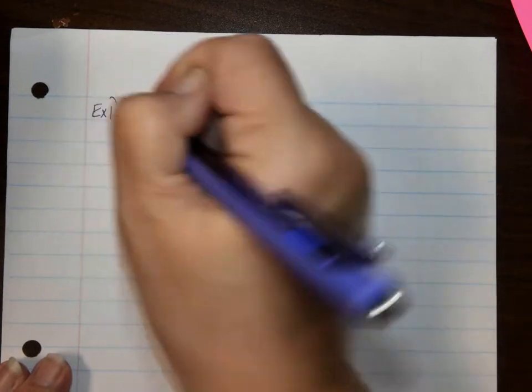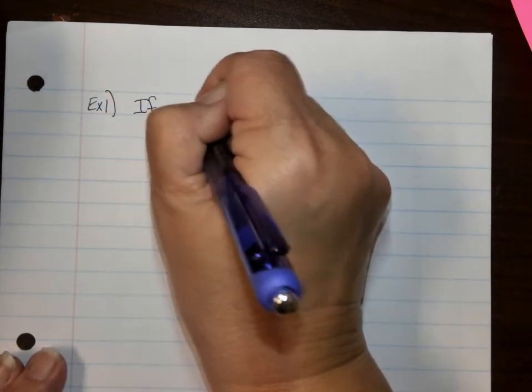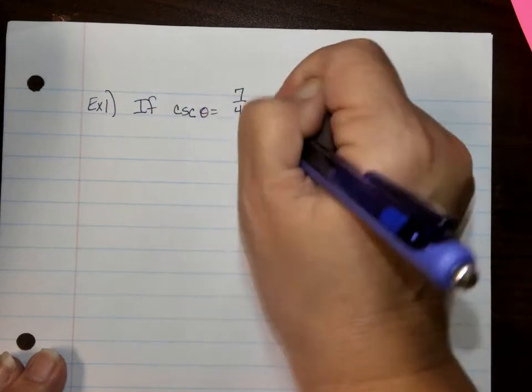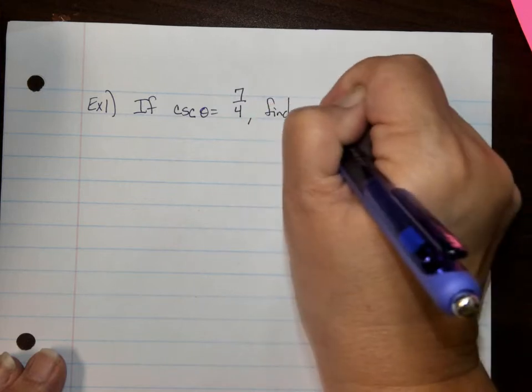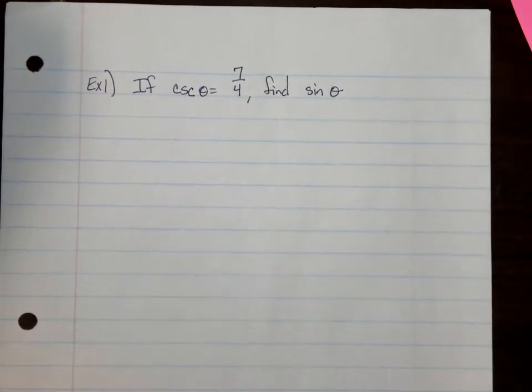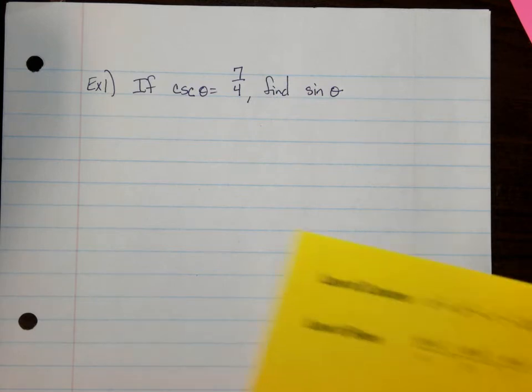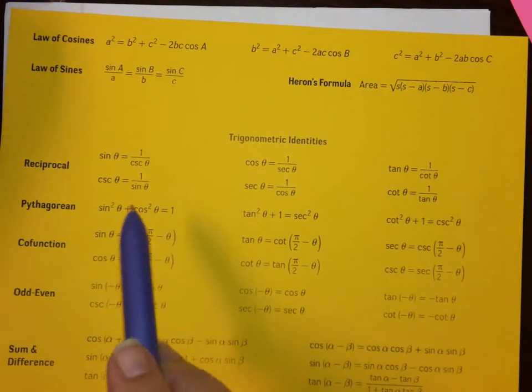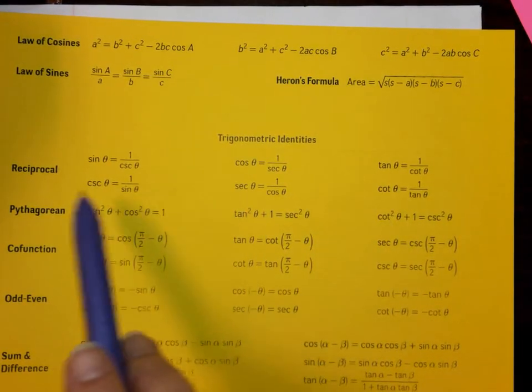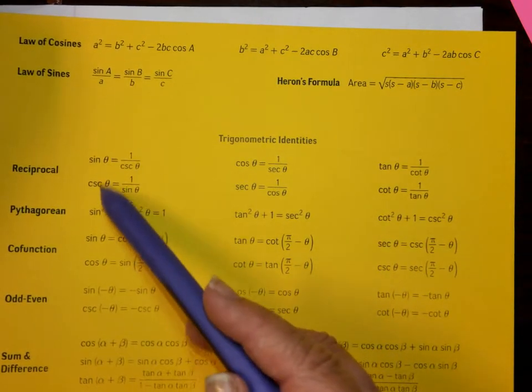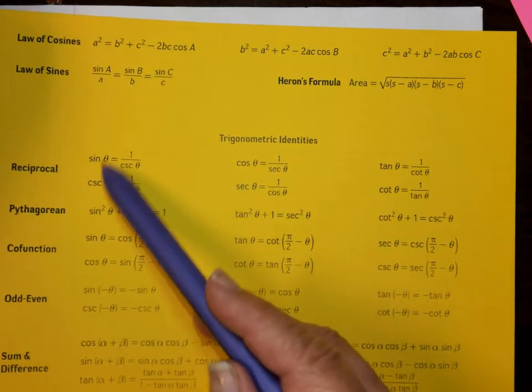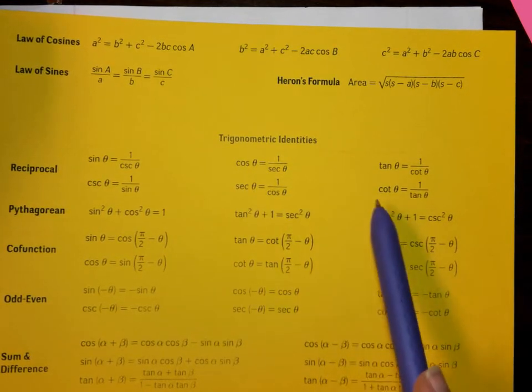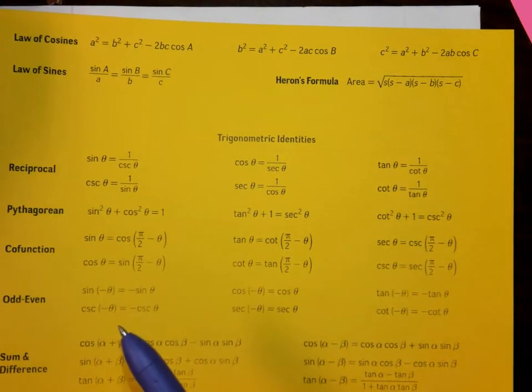Alright, so example one. If the cosecant of theta is equal to seven over four, find the sine of theta. So the hardest part is going to know where to get started. But for today, I'm telling you that we're focusing on the reciprocal identities. So on your chart, these are your reciprocal identities. Sine and cosecant are reciprocals. So these go vertically in little pairs. Cosine and secant are reciprocals. Tangent and cotangent are reciprocals.